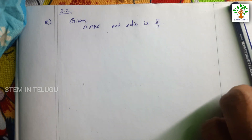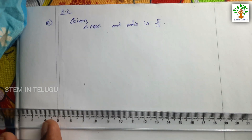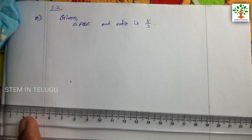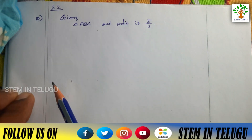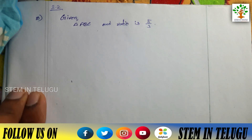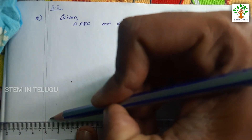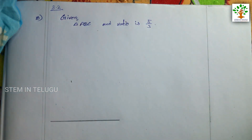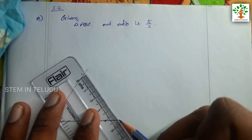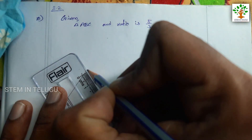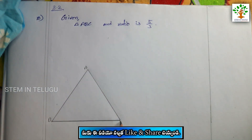First, we draw each triangle. If you want to use the margin, you can use the margin in the rule paper. This is why you want to do the rough work first. You can draw triangle ABC.